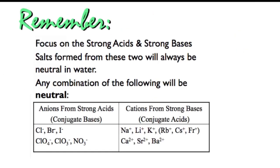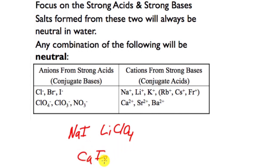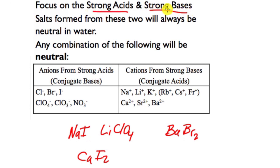You may want to pause the video and write this down. Salts formed between strong acids and strong bases form neutral solutions. For example: sodium iodide, lithium perchlorate, calcium iodide, barium bromide — all neutral solutions. The cation is a conjugate acid from a strong base with no affinity for anything, and the anion is a conjugate base from a strong acid — both neutral. Any combination of these always gives a neutral solution. You can determine this by memorizing your strong acids and strong bases.